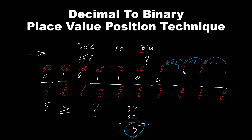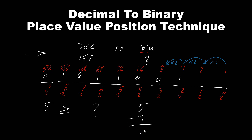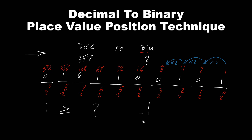Does 5 greater than or equal 4? Yes, it is greater than 4. So we put 1. Now because this is on, we subtract to get the new value. 5 minus 4 is 1. Now 1 is our new value. Does 1 greater than or equal 2? It's not greater than 2. So let's put 0. Does 1 greater than or equal 1? It is equal. So let's put 1. 1 minus 1 is 0. And when we get to the value of 0, we stop.